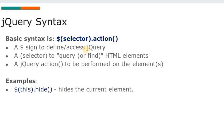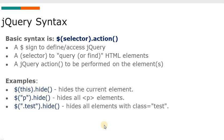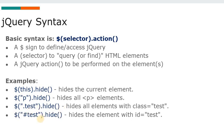Here are some examples. Dollar sign with dot hide hides the current element. In double quotation marks specifying 'p' as an element selector hides all paragraph elements. Using dot test — the dot operator represents a class attribute as in CSS — hides all elements with class equal to test. Similarly, using a hash for ID hides all elements with ID equal to test.